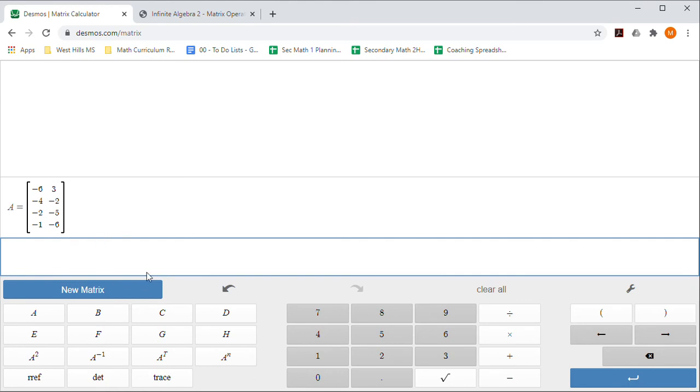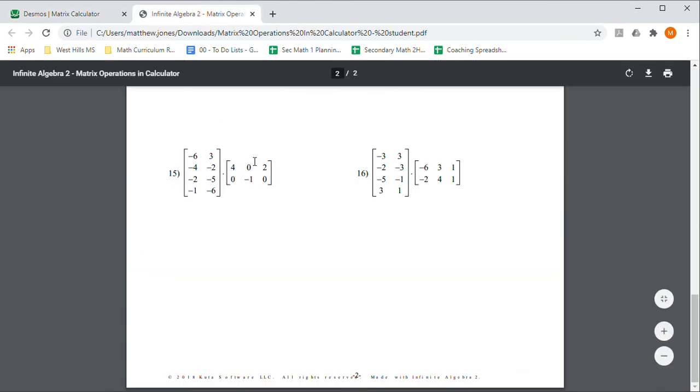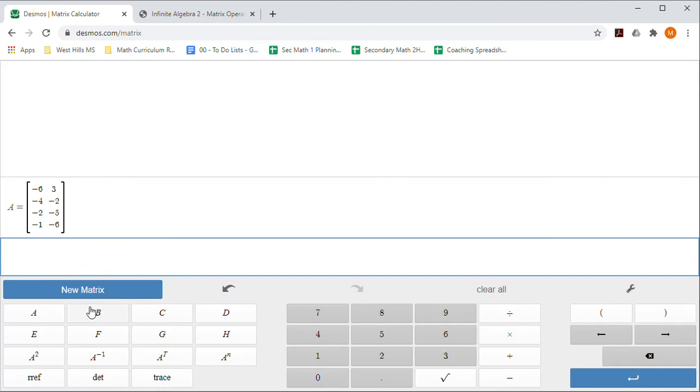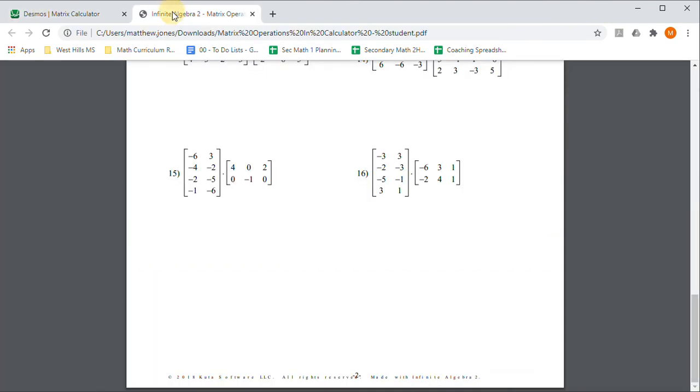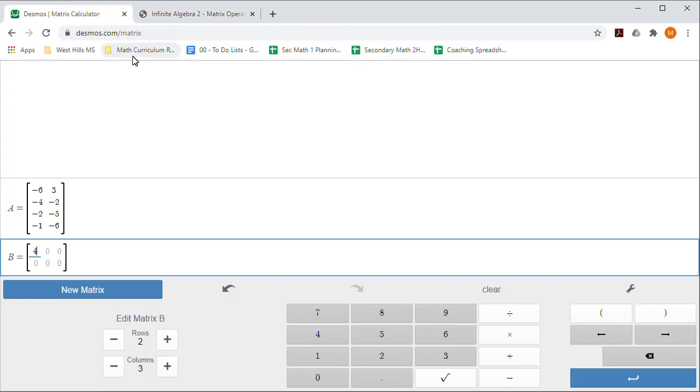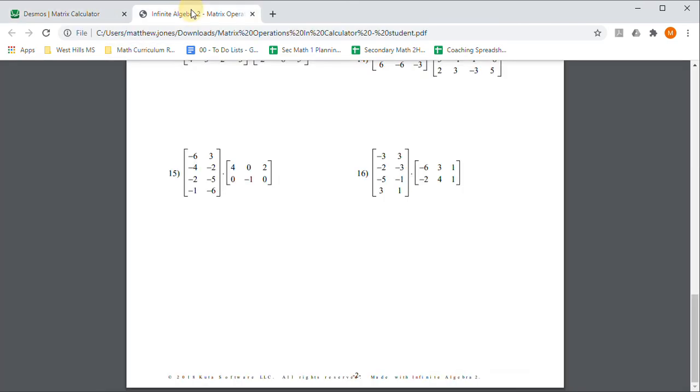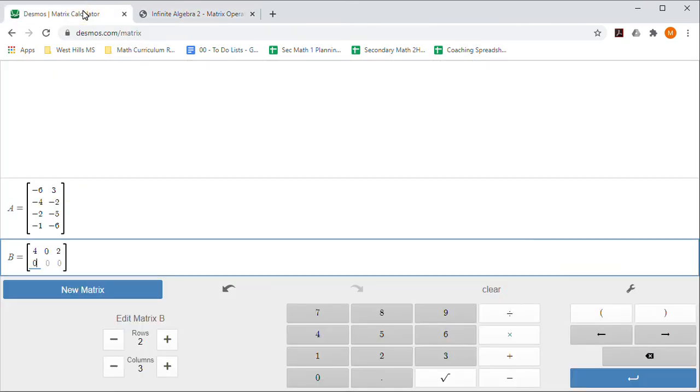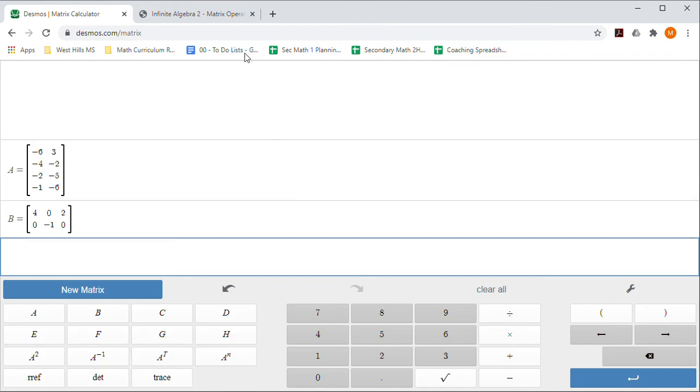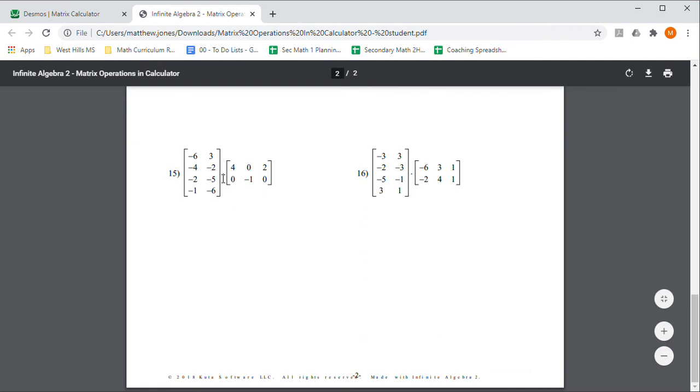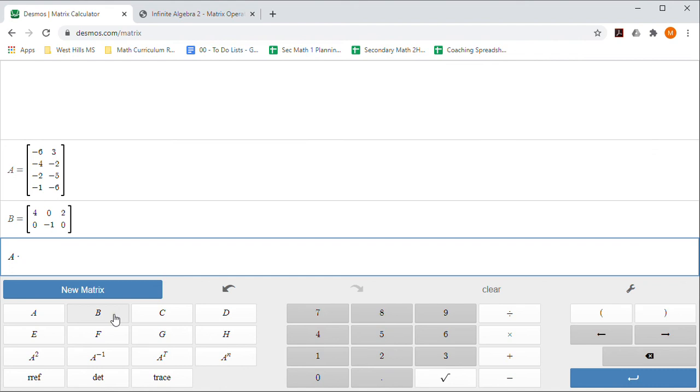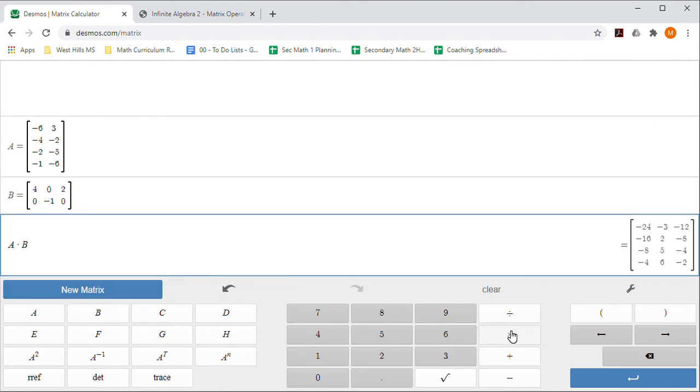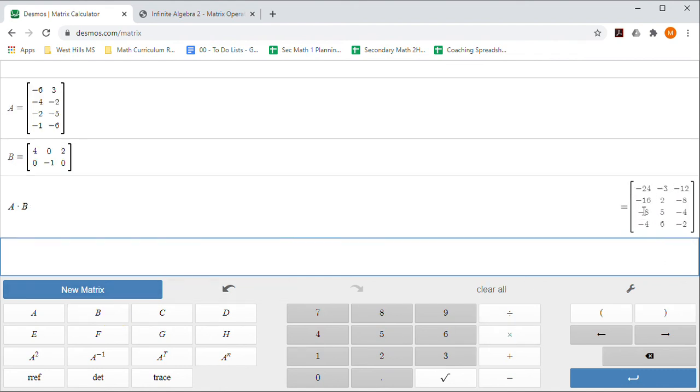I need to put in my second one which has two rows and three columns, so I'm going to enter a new matrix: two rows, three columns. I'm going to enter these numbers in: 4, 0, 2, and 0, negative 1, 0. So I have my second matrix in there. I am trying to multiply these two together, so I'm going to push A and then multiply, then B, and enter. This is the resulting matrix—it's kind of big, it's got four rows and three columns, but that's the answer.